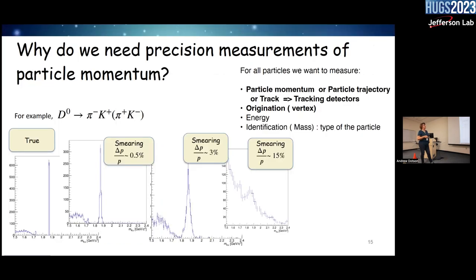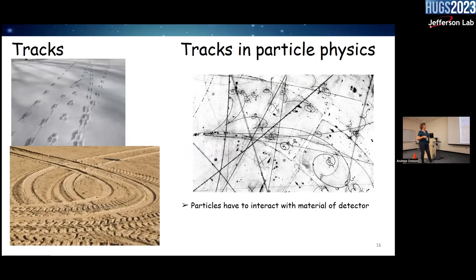For particle momentum we need to know the particle trajectory — we need tracking detectors. Like animals leaving tracks in snow, particles interact with the detector material, leaving a trail. What we measure is the trajectory curvature, from which we identify the sign of the charge and the vertex. Modern detectors record tracks electronically. Particles interact with material and leave energy deposition, which we collect into our computers for analysis.